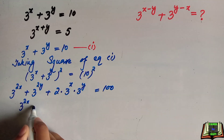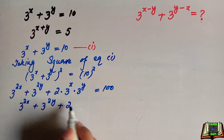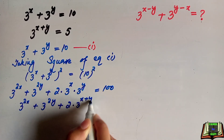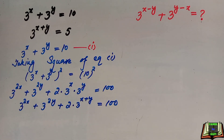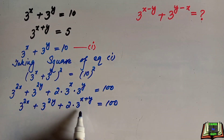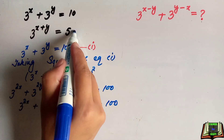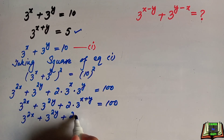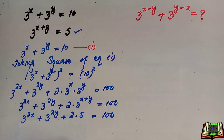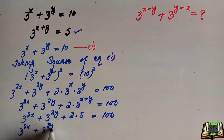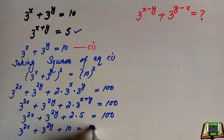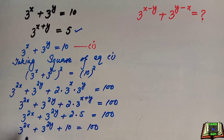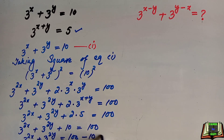So we have 3 to the power 2x plus 3 to the power 2y plus 2 — since the bases are the same, the powers are added — giving 3 to the power x plus y, equals 100. We know that 3 to the power x plus y equals 5, which is given. So we replace it: 3 to the power 2x plus 3 to the power 2y plus 2 times 5 equals 100, which gives 3 to the power 2x plus 3 to the power 2y plus 10 equals 100. Subtracting 10: 3 to the power 2x plus 3 to the power 2y equals 90.